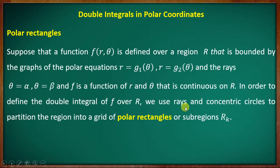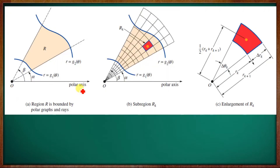In order to define the double integral of f over R, we use concentric circles to partition the region into a grid of polar rectangles or subregions. The region is bounded by r = g₁(θ) and r = g₂(θ), with angles α and β.